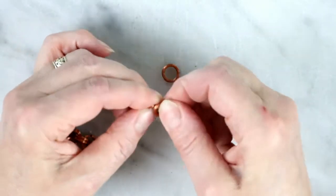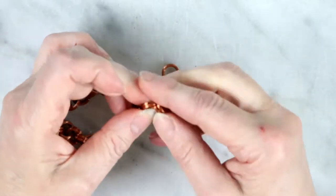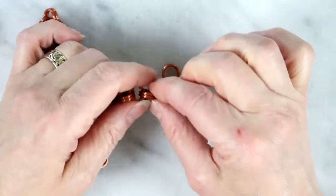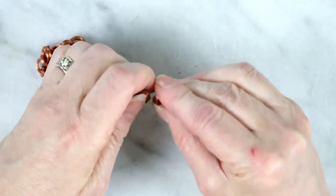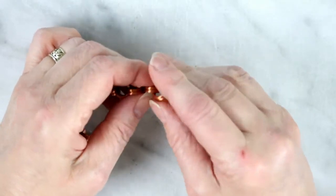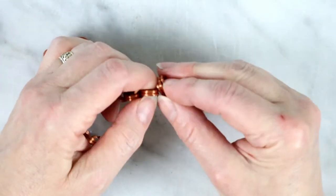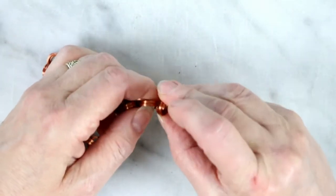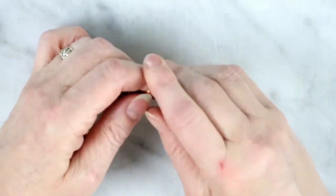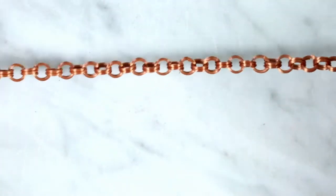And then just wind them onto each other. Joining filament split rings is actually way easier than metal ones, because they tend to be not as stiff. Until you have a chain.